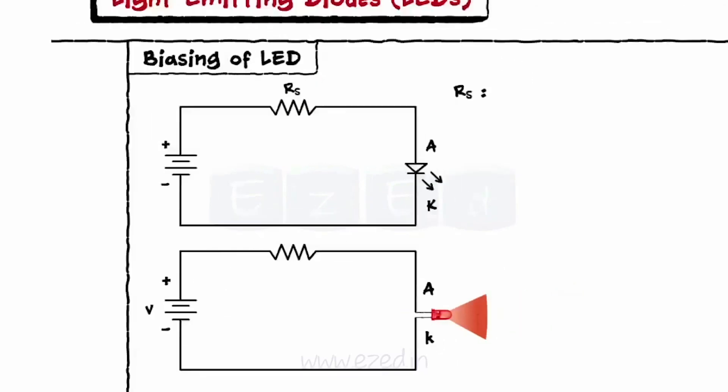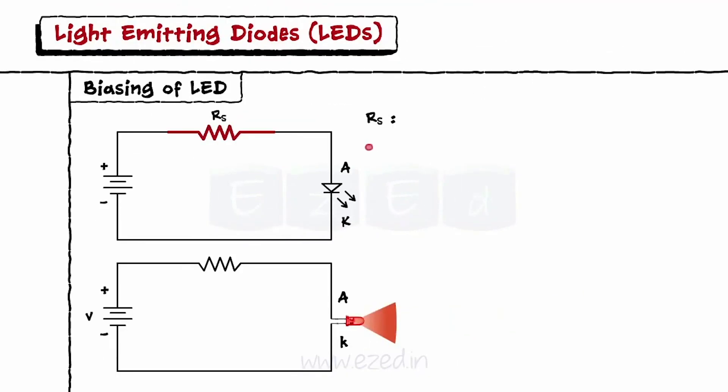Resistor RS is always connected in series with the LED to limit the current flowing through it and to protect it from damage due to excess current.